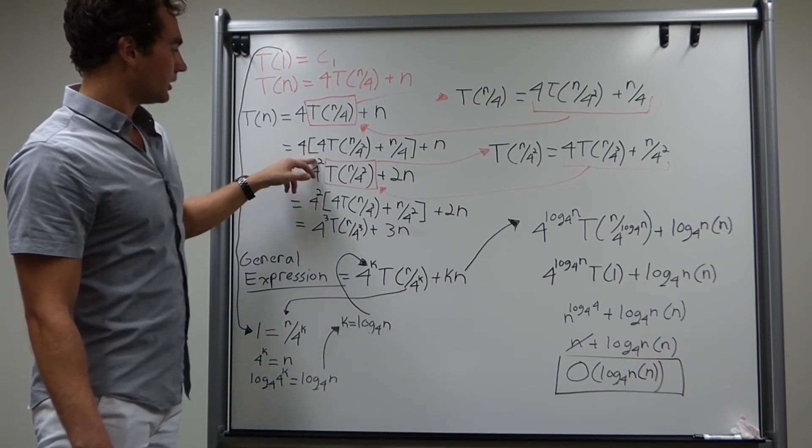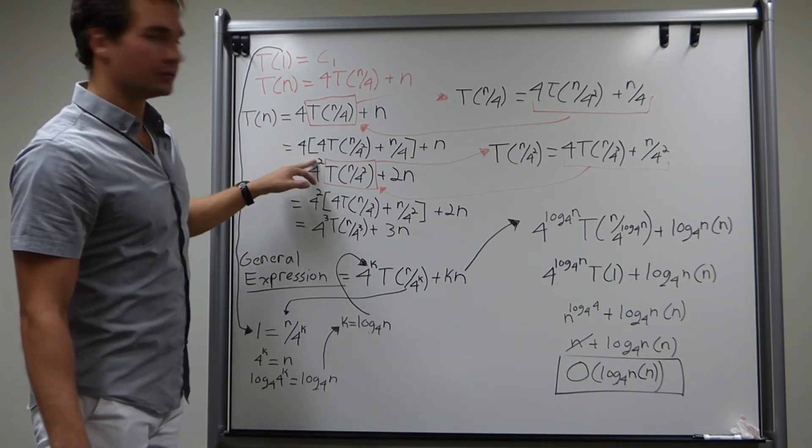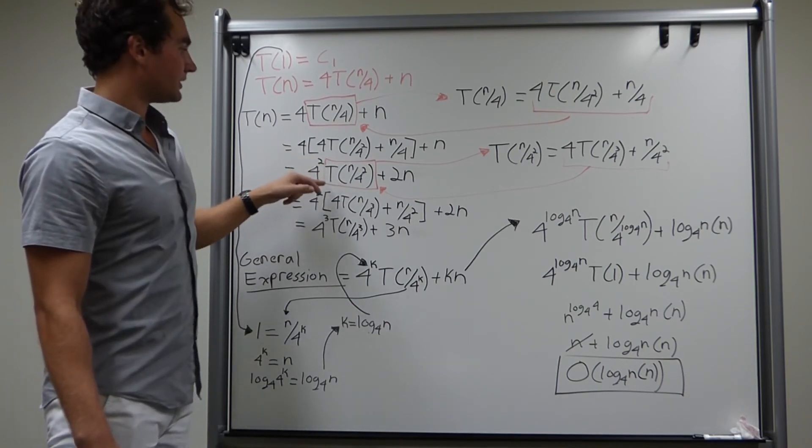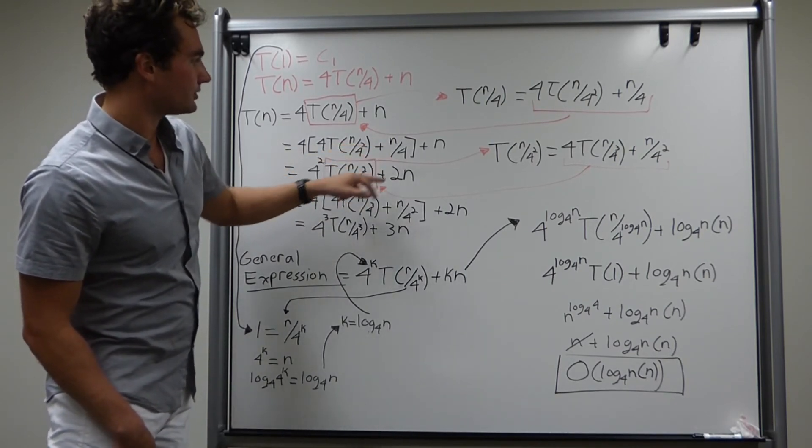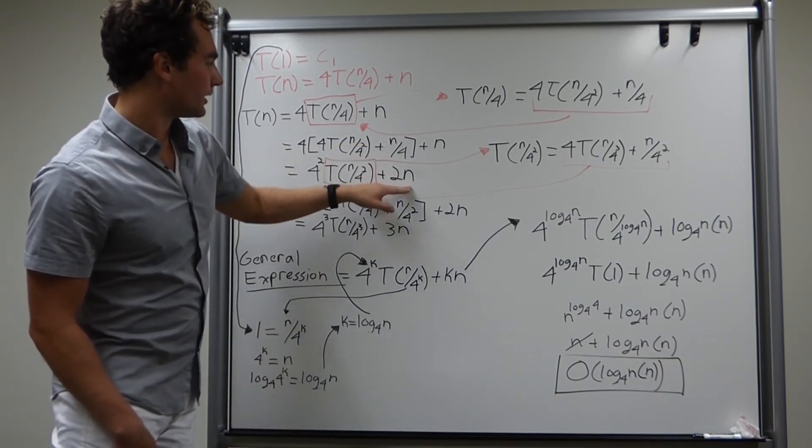We're going to do some math. We're going to keep the exponent here. Don't write 16. Write 4 squared so you can see the pattern. Then, we have T(n/4²). Notice how we have a 4 multiplied by n/4, which produces an n. n plus n is 2n. Great.